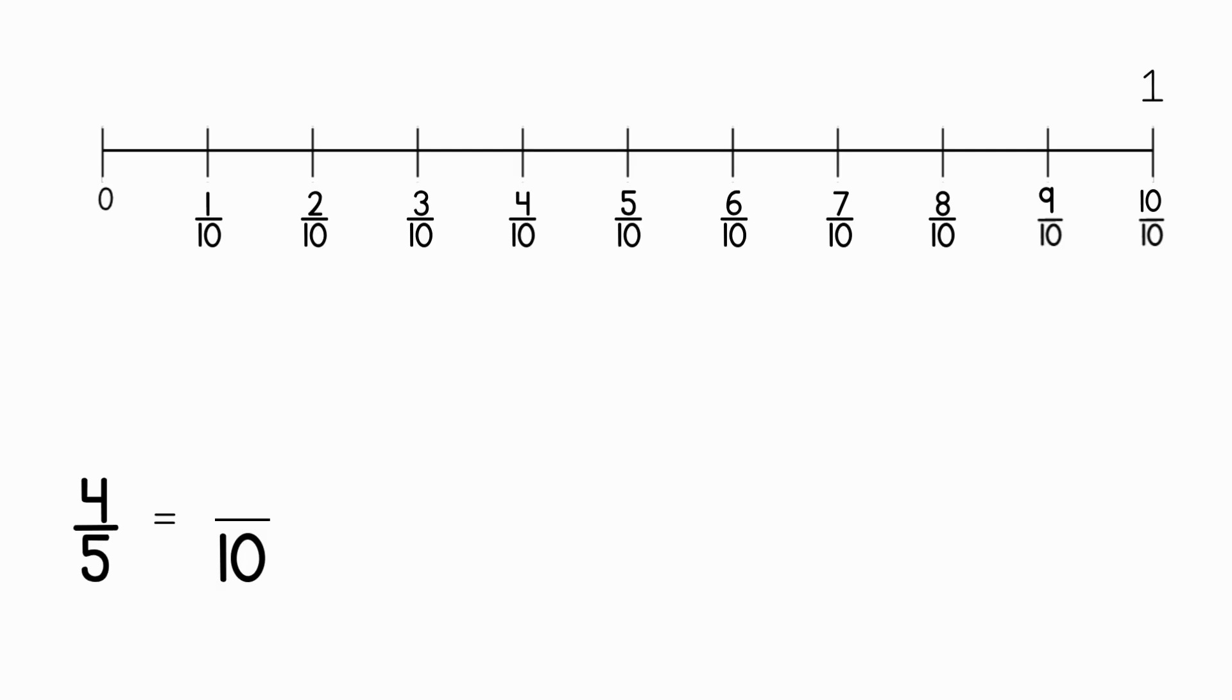To get a denominator of 10, you needed to multiply five times two. Since you multiplied the denominator by two, you should have multiplied the numerator by two. Four times two equals eight. So, our equivalent fraction is eight tenths. Four fifths is equivalent to eight tenths, so we can plot four fifths in the same spot as eight tenths on the number line. How did you do?